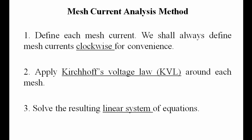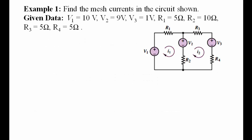Example one: find the mesh currents in the circuit shown. First of all, we are going to define the mesh currents I1 and I2, and the direction of each mesh current is clockwise.